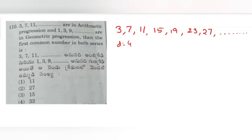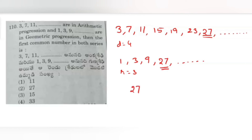Comparing the two series, the first common term appearing in both the AP and GP series is 27. So the answer is option 2.